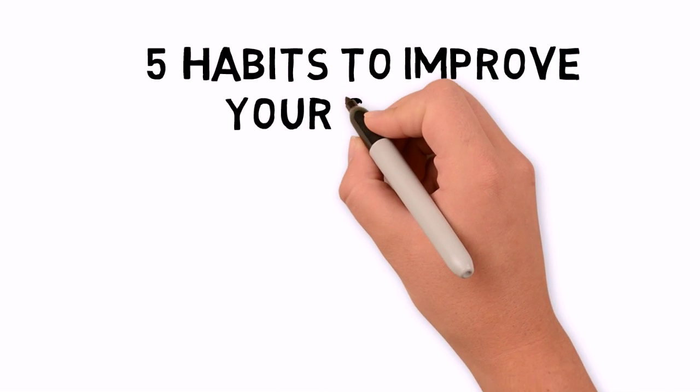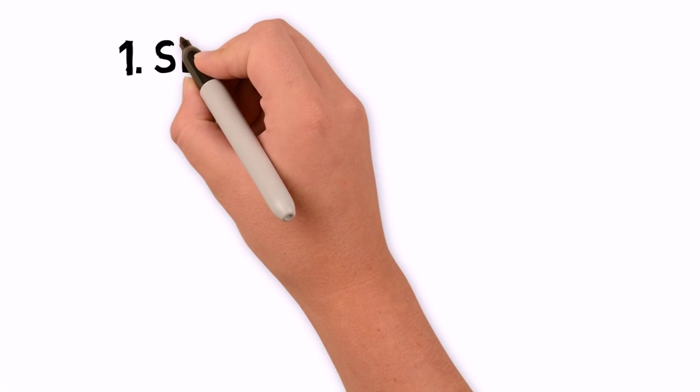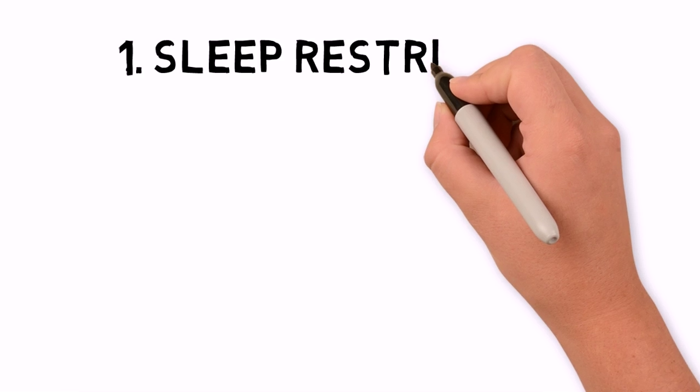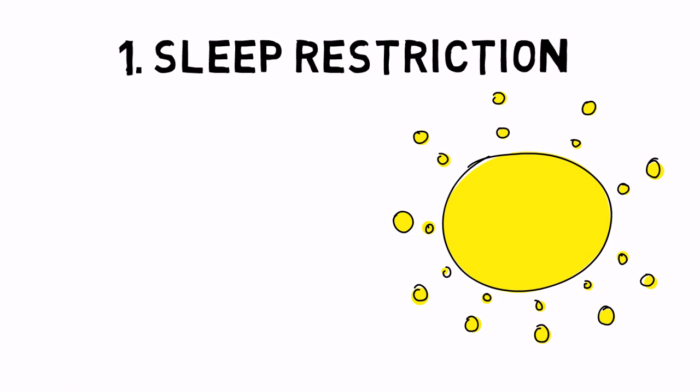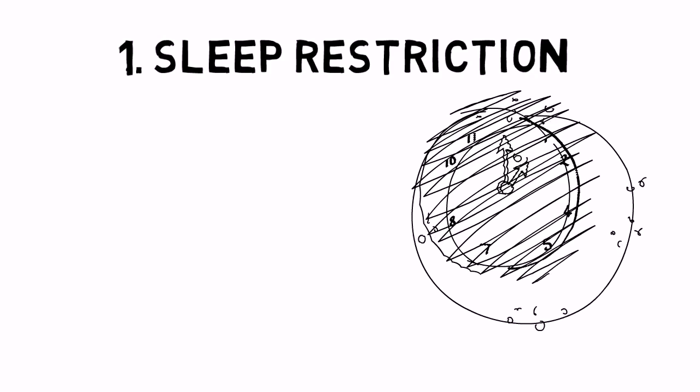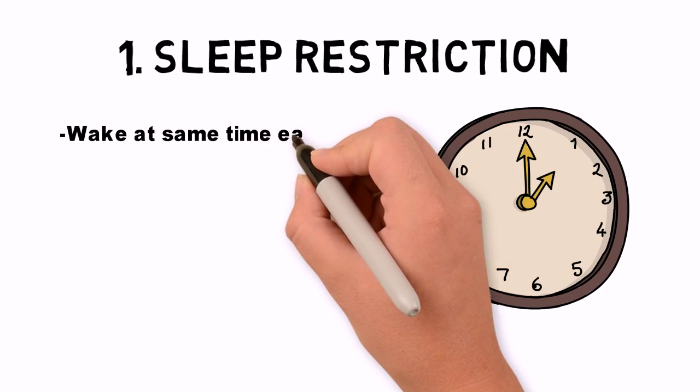Five habits to improve your sleep. Habit one: sleep restriction. Sleep restriction entails waking up at the same time every day, even on weekends, and refraining from taking naps in the afternoon. Though sleep restriction requires strict discipline...